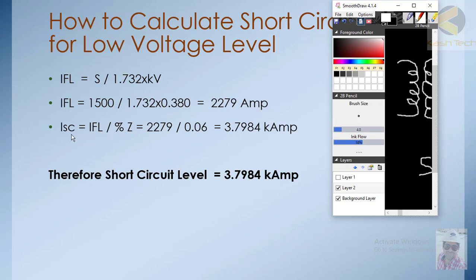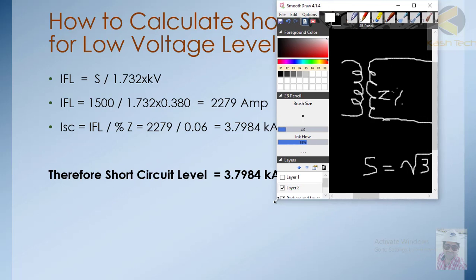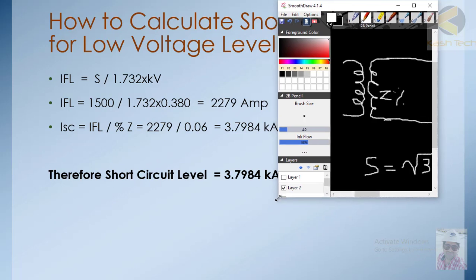To calculate the short-circuit current, divide the full load current by the percentage impedance: 2279 / 0.06 = 3.798 kA. So the short-circuit level for this transformer is 3.798 kilo-amperes. This example shows how to calculate the short-circuit level and why it is important to know before sizing cables.